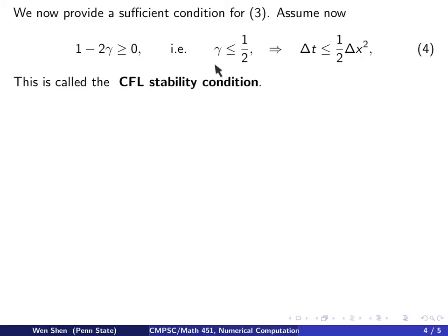Recalling the definition of γ, which is Δt over Δx squared. This says Δt has to be bounded by half Δx squared. This condition is called the CFL stability condition.